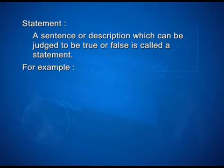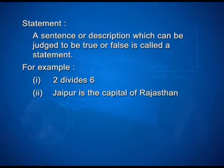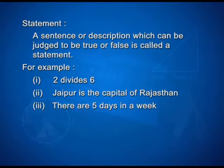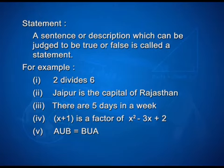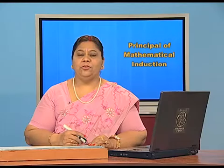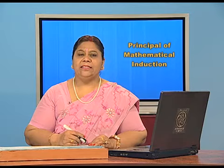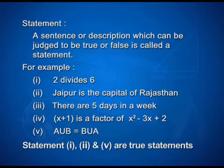For example: (1) 2 divides 6; (2) Jaipur is the capital of Rajasthan; (3) there are 5 days in a week; (4) x+1 is a factor of x²−3x+2; (5) A union B equals B union A. Here, statements 1, 2, and 5 are true statements, whereas statements 3 and 4 are false.